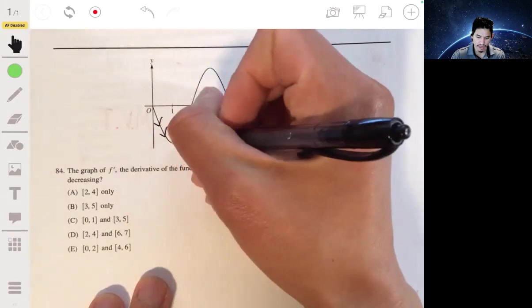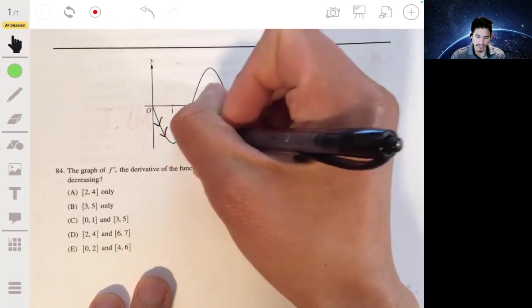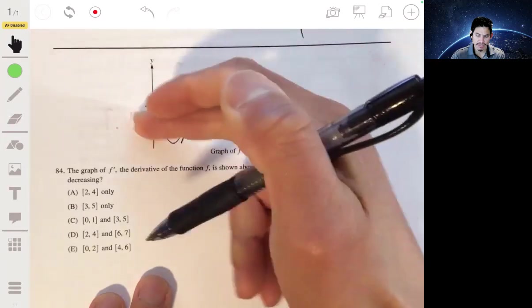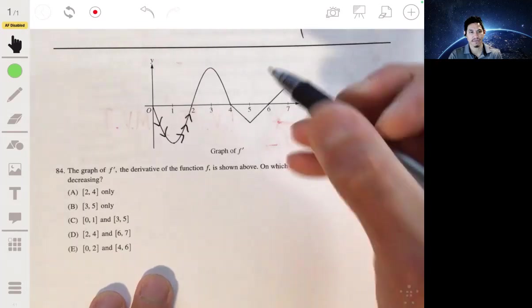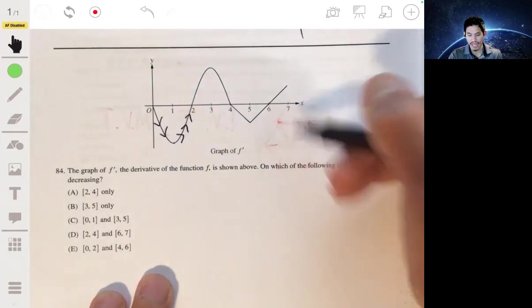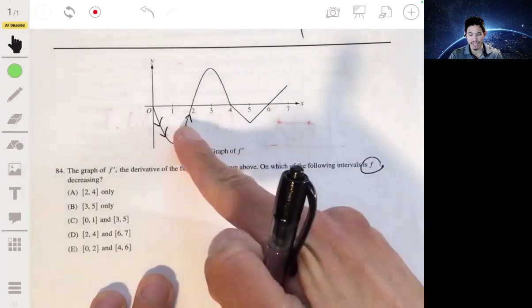Don't get confused by where it's going down. You only care about where it's negative, because anytime it's negative, that tells you F is decreasing. Remember, this is F prime, and F is decreasing anytime the derivative is negative.